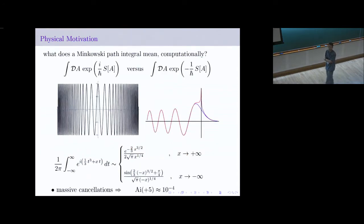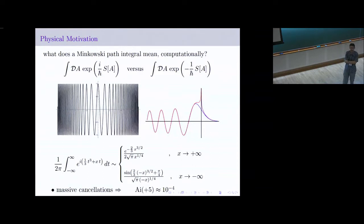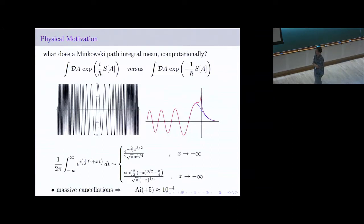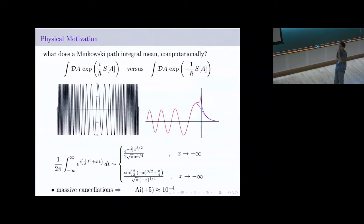Let's just begin with something really simple. This is what physics is: the path integral with an 'i', adding up phases. This is what's usually calculated. How do you go from one to the other? The formal Wick rotation is fine in certain circumstances, but not always. Here's the sort of poster child of this problem: the Airy function and its integral representation.